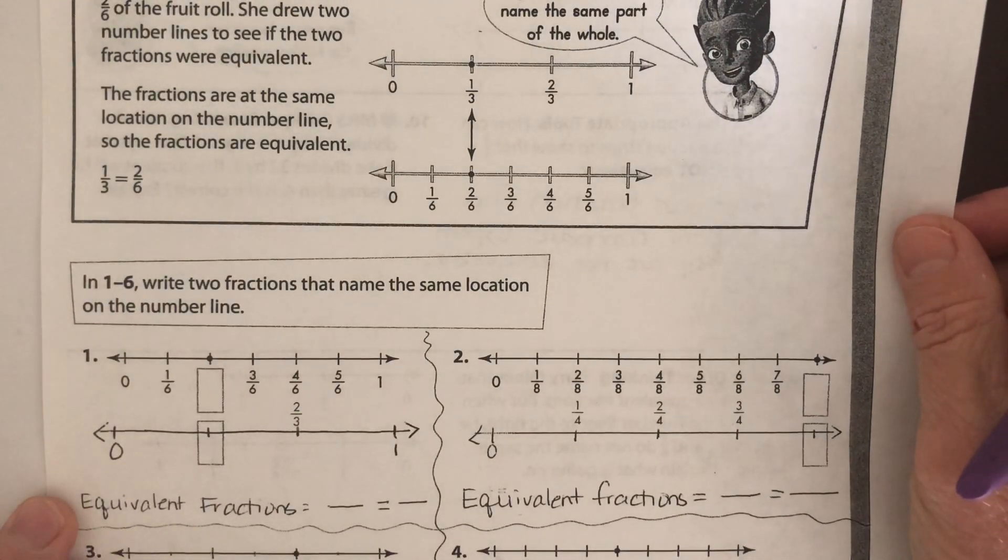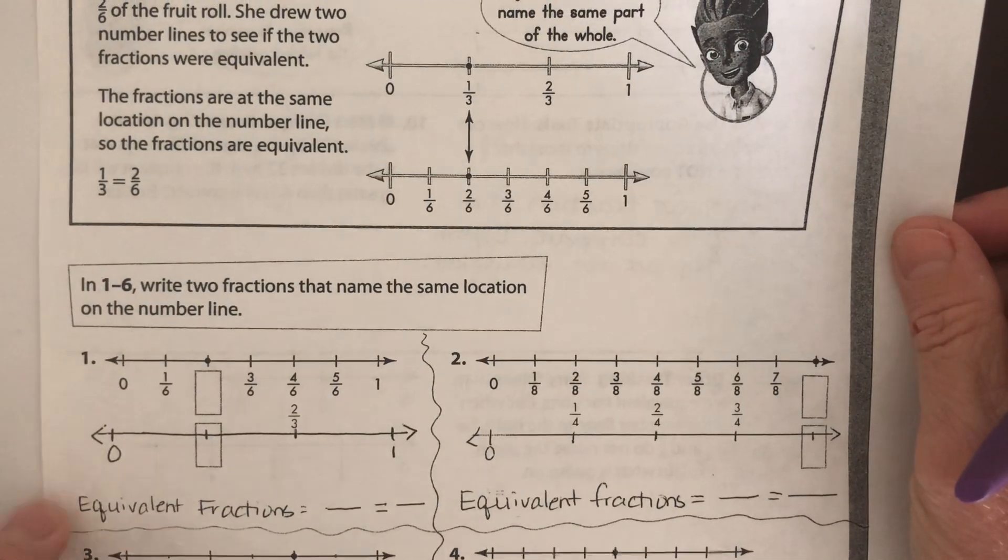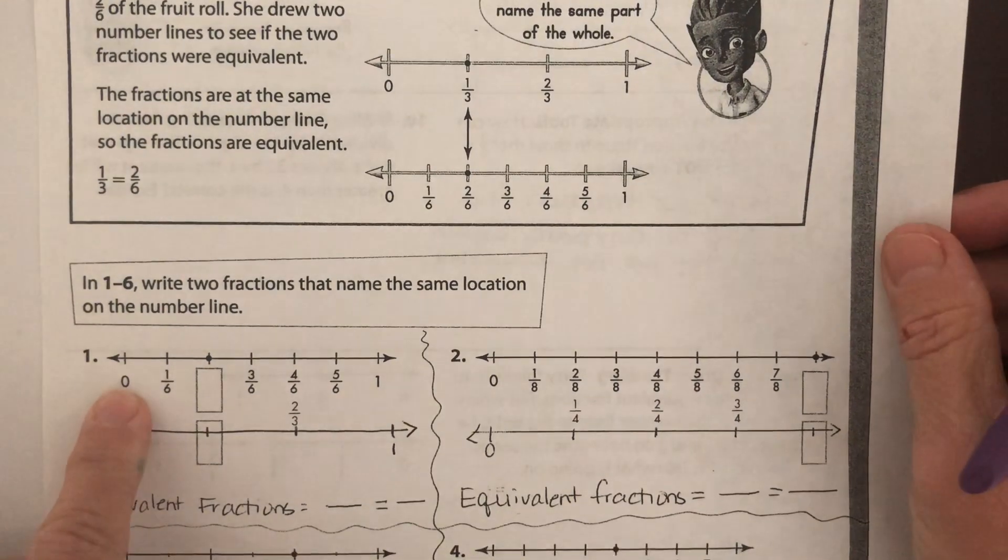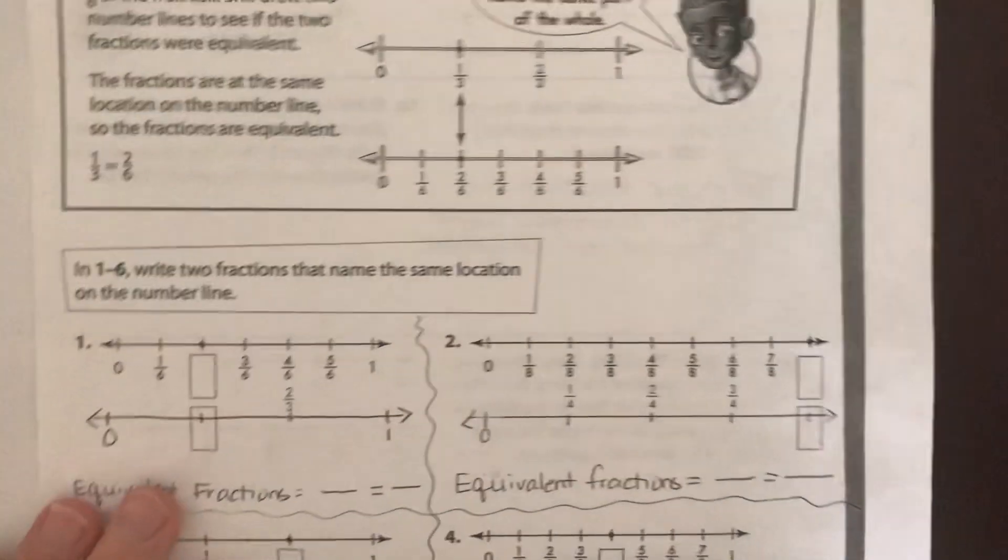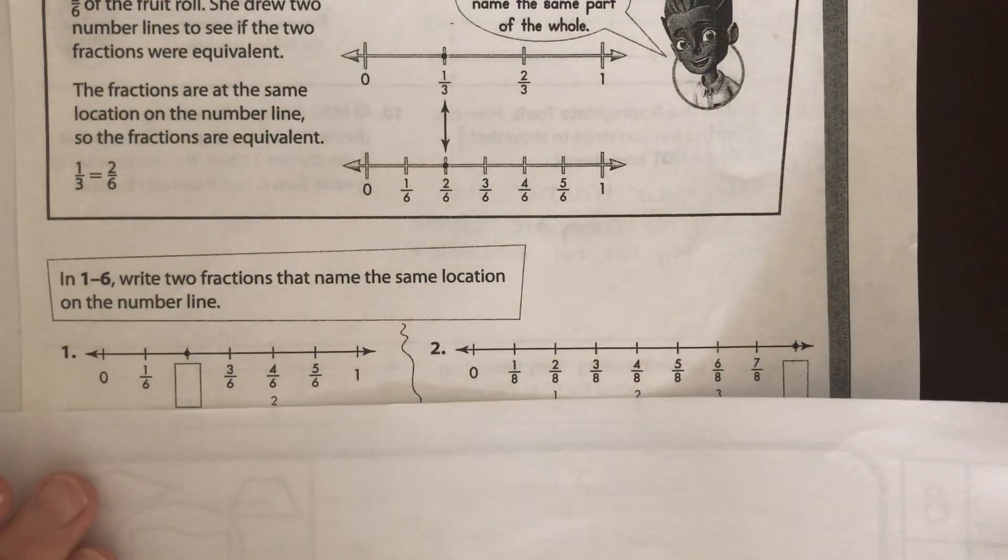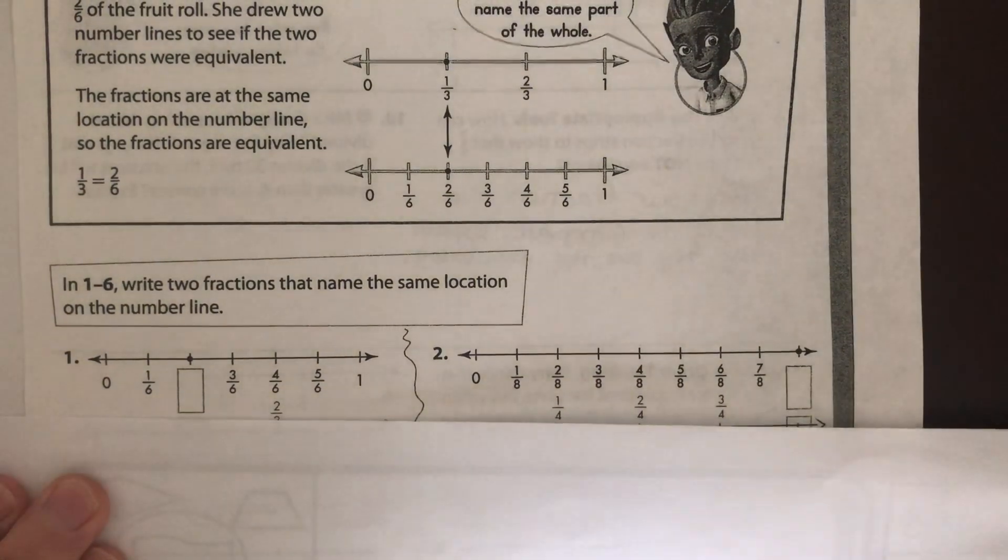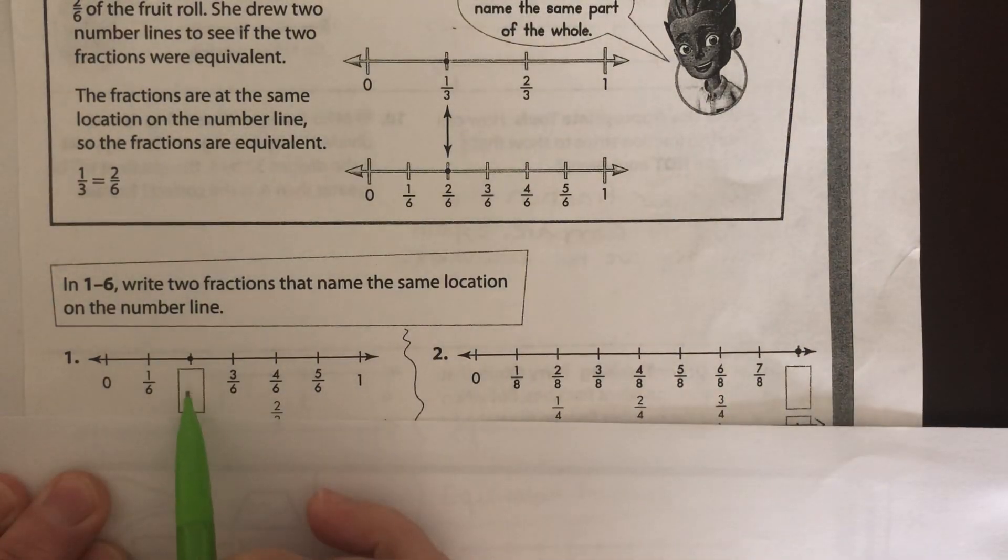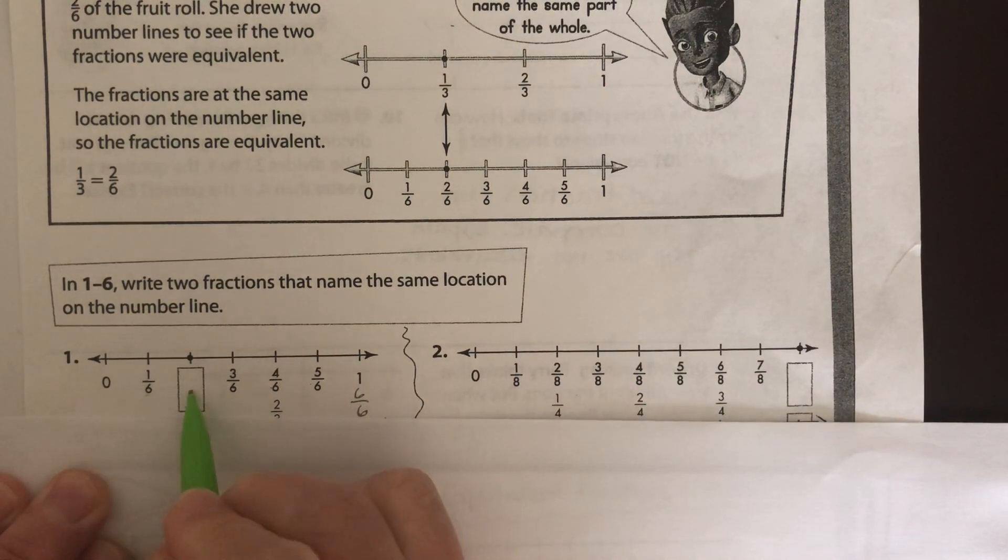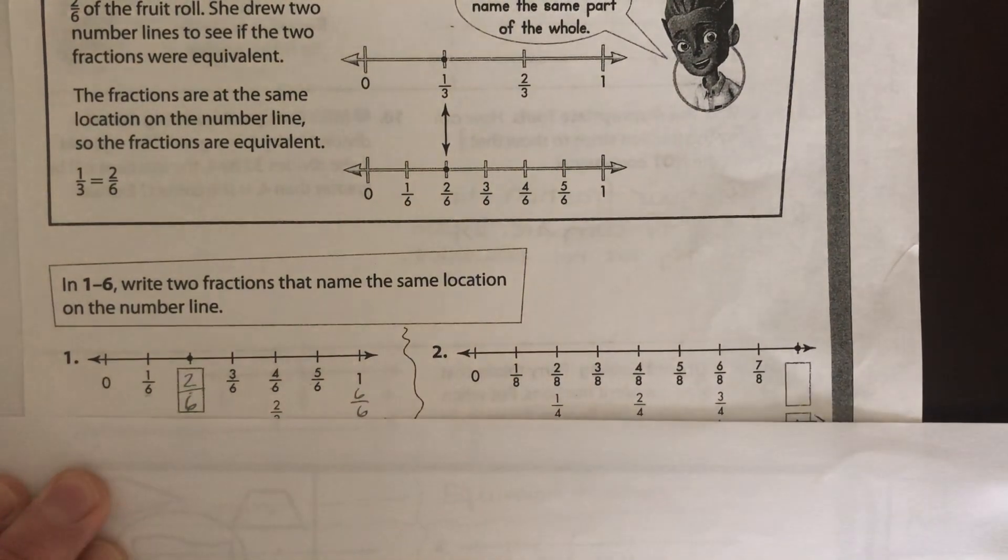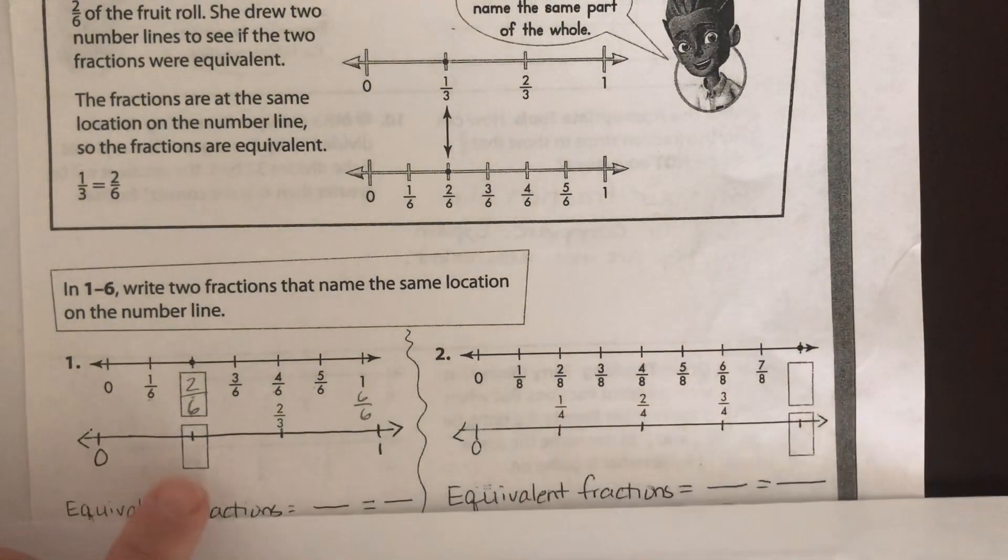We are also going to use our fraction flip book because that's a great way to do it as well. We do need to be able to see it on the number lines, but sometimes it's very helpful to use our fraction flip book to really get a good sense of equivalent fractions. So, write two fractions that name the same location on the number line. Let's just jump right into here. Basically you want to kind of ignore this one down below and just look at this number line up here. And we need to figure out which one is missing. So we have 1-6, some number 6, 3-6, 4-6, 5-6, and of course we know this is 6-6. So what one is missing here? 1-3-4-5-6. That would be 2-6, right?